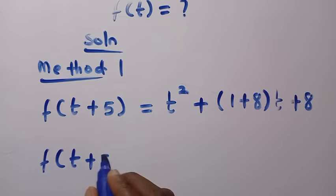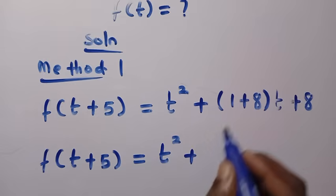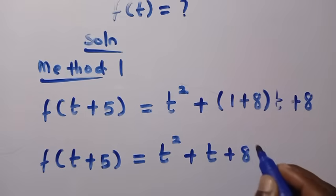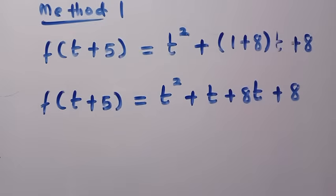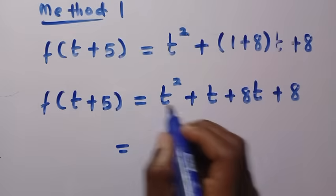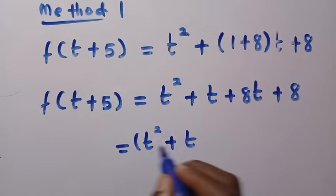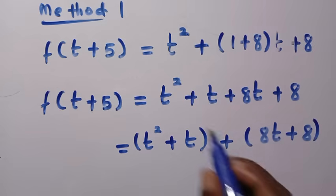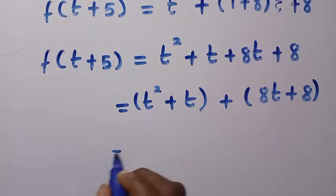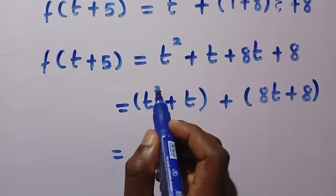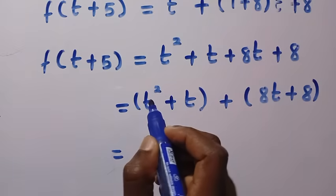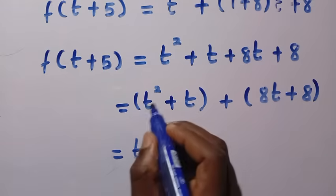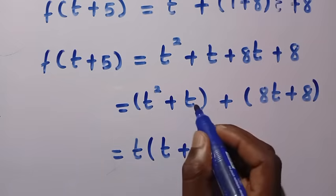So f(t+5) equals t squared plus, opening this out, 1 multiplied by t gives t, plus 8 multiplied by t gives 8t, then plus 8. Grouping this into two pairs, we have t squared plus t in one bracket, plus 8t plus 8 in another. Factoring out t from the first group gives t(t+1).